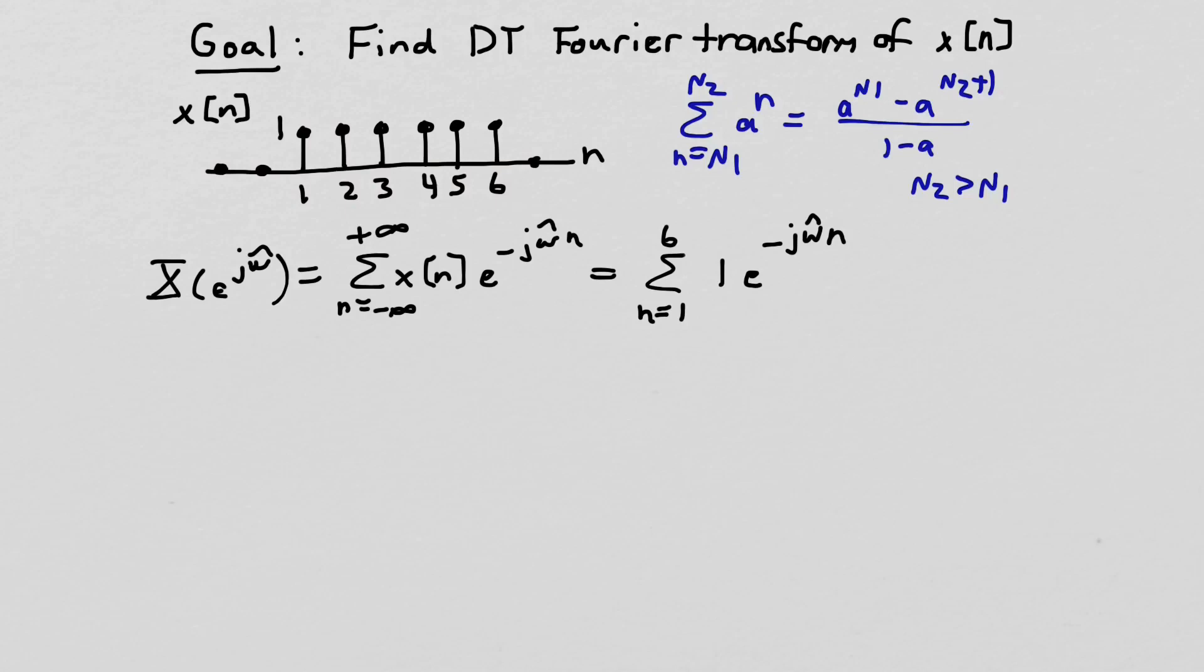All right, so now we have something that is in the same form as this partial sum of a geometric series. And the a here, basically, is doing a to the n. This is what a is equal to: a is e^(-jω̂n). And the 1 here doesn't matter because we're just multiplying by 1, which has no effect. All right, so now we can use this equation here and write out the formula.